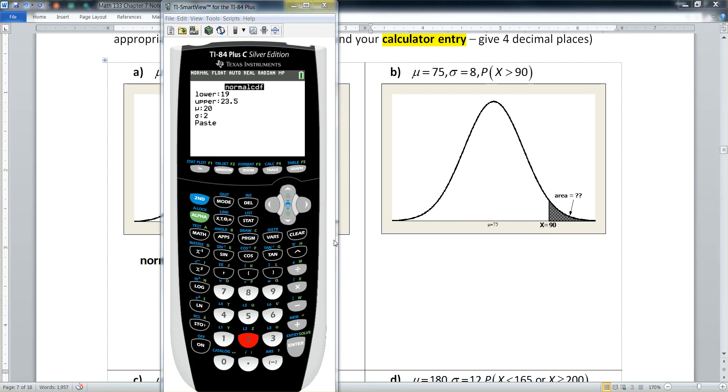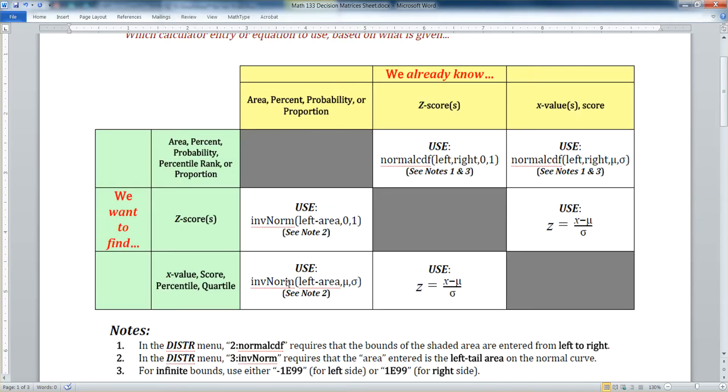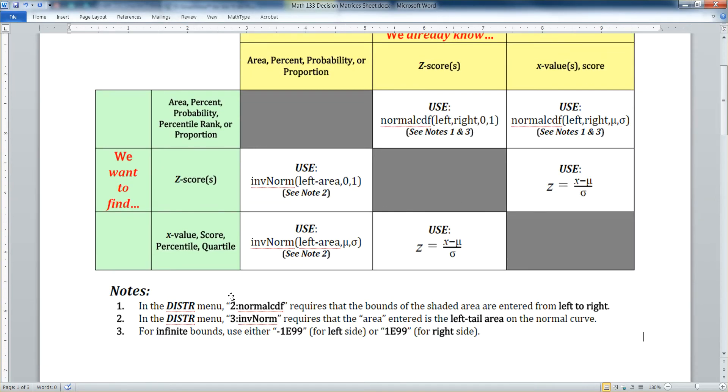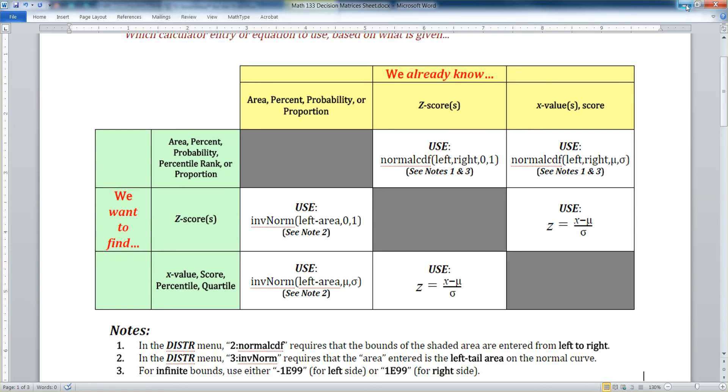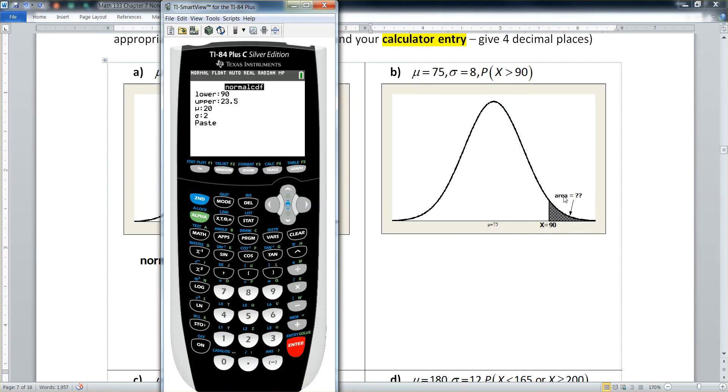So for that left-hand edge, we want to say 90 because that's the left-hand edge of what we shaded. It's the lower bound of what we shaded. Now the upper bound, that's a little tricky because this goes on forever and ever. Remember, a normal curve has a horizontal asymptote at the X axis, meaning it never reaches it. It never touches it. So when we go back to look at the decision matrix, if you look at note three, it says for infinite bounds, use either negative one E 99 for the left side or positive one E 99 for the right side.